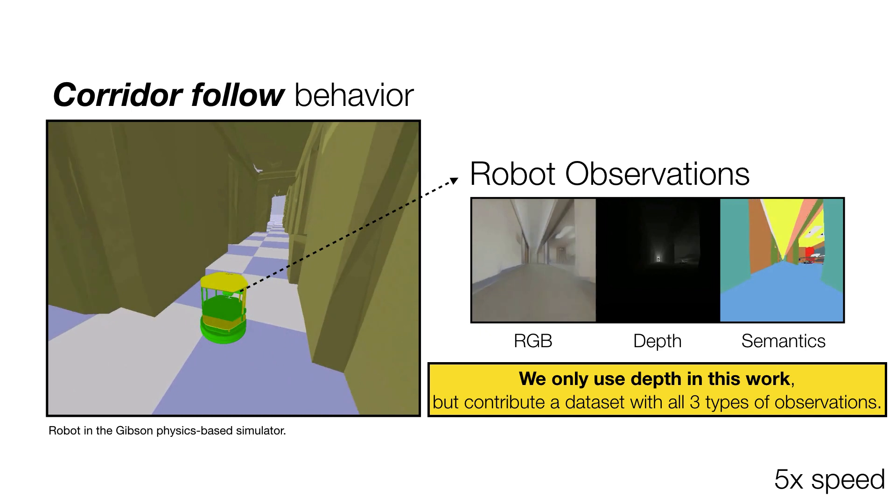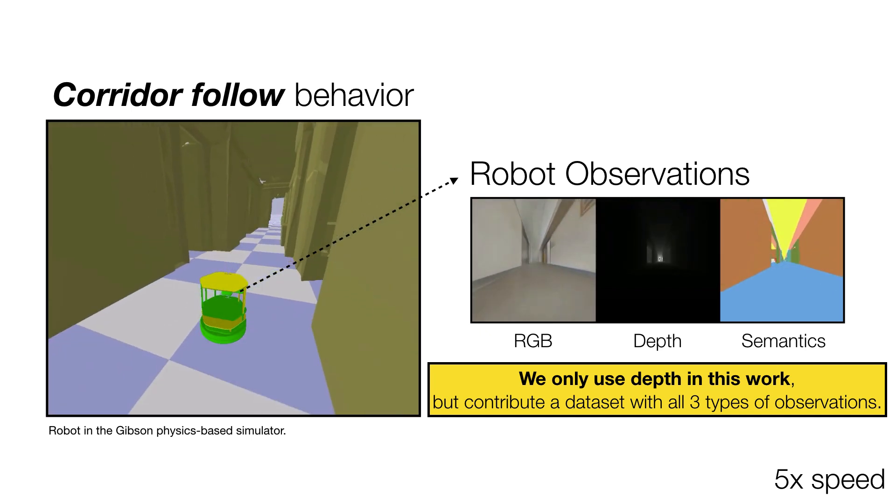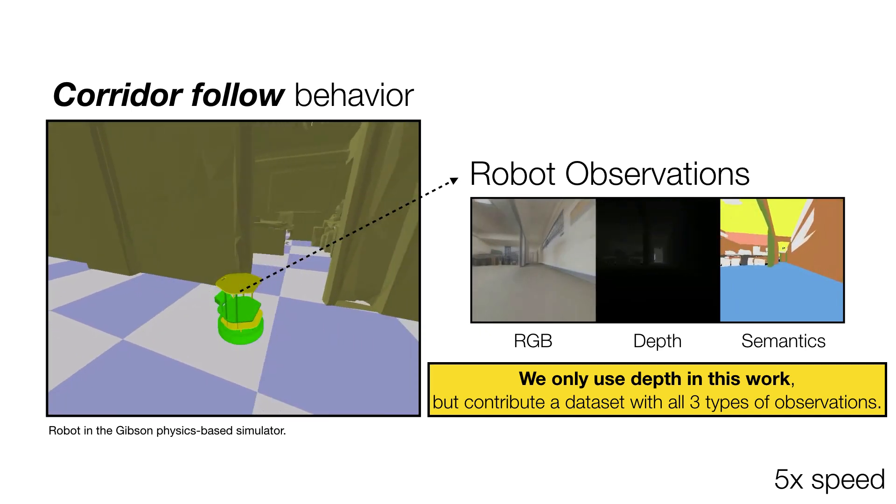As can be seen in the video, the corridor follow behavior enables the TurtleBot to robustly traverse corridors while avoiding collisions.